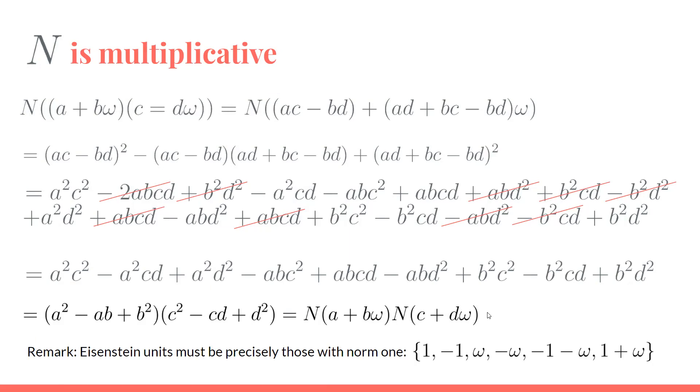Having done that, now that the norm is multiplicative, this also gives us the conclusion that the units in the Eisenstein integers are those things with norm 1, which are just ±1, ±ω, and ±ω², written in this form.